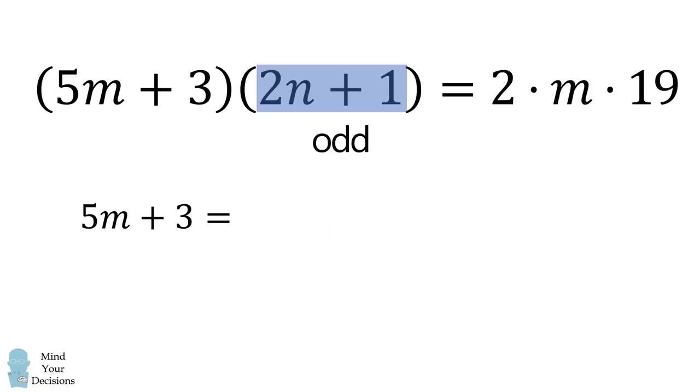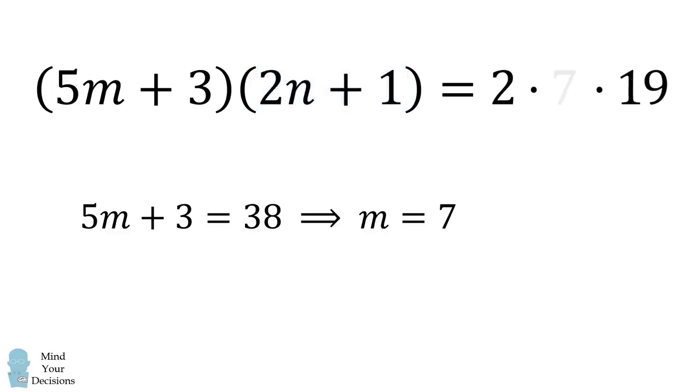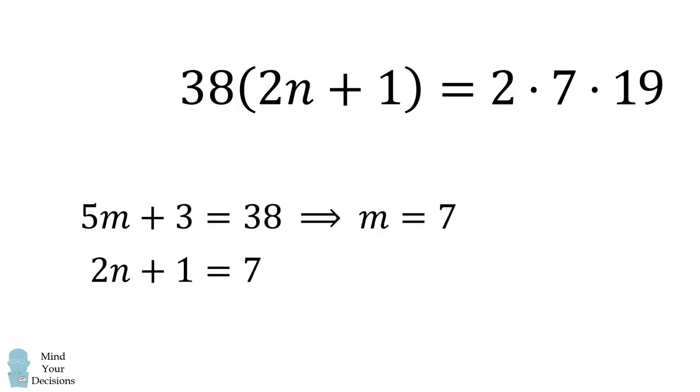So the other possibility is that 5m plus 3 is equal to 2 multiplied by 19. This is equal to 38, which means that m is equal to 7. If m is equal to 7, we can substitute in, and since 5m plus 3 is equal to 38, we can see that 2n plus 1 must be equal to 7. This means that n is equal to 3.